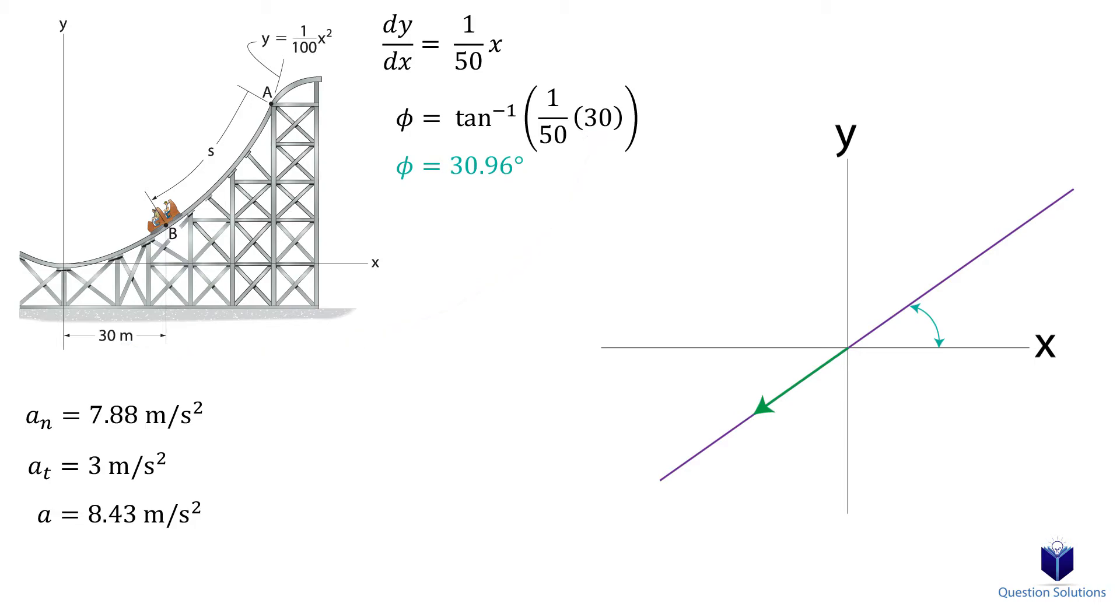Next, we can draw the normal acceleration. You will probably remember from reading your textbook that normal acceleration always points to the center of the curvature. Let's draw the magnitude of acceleration as well.